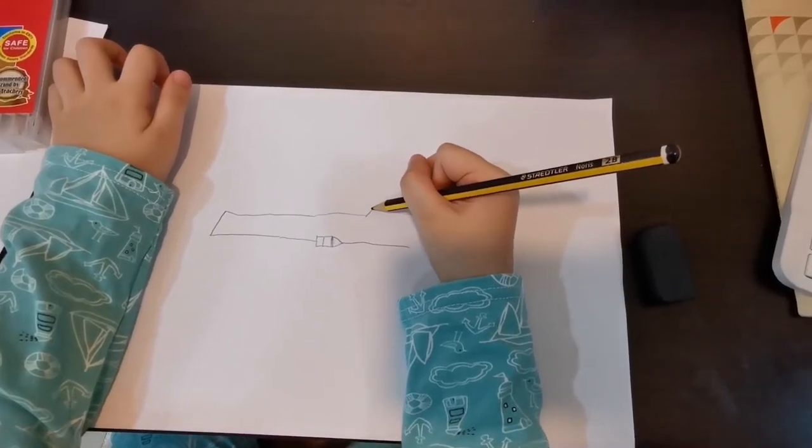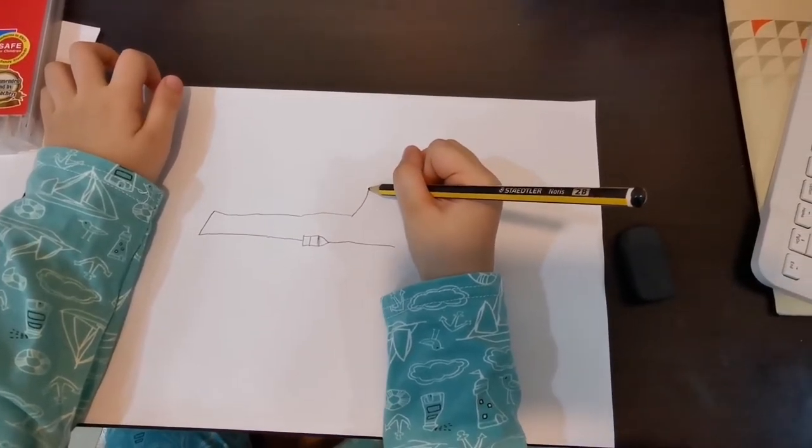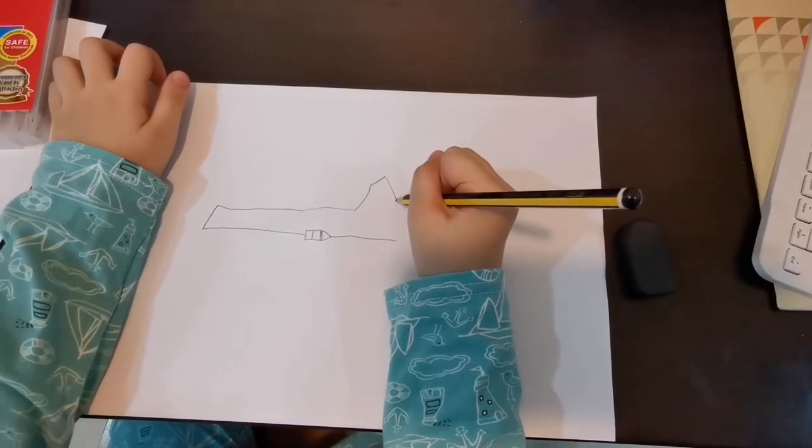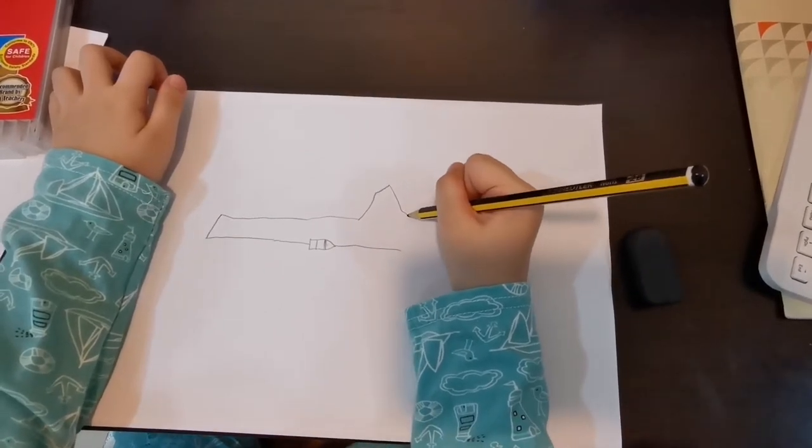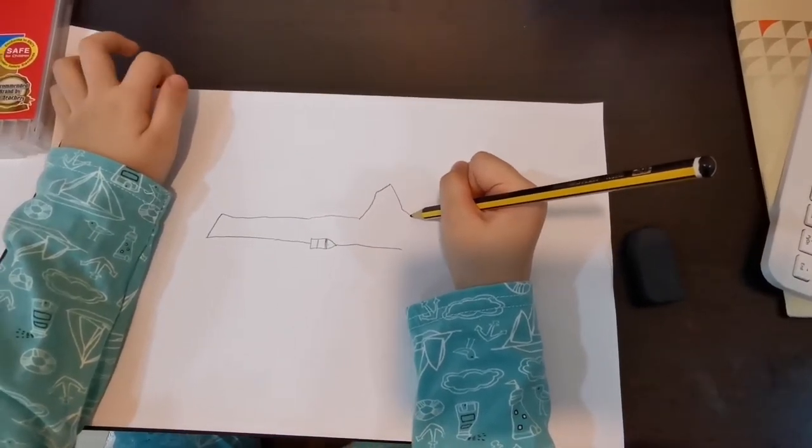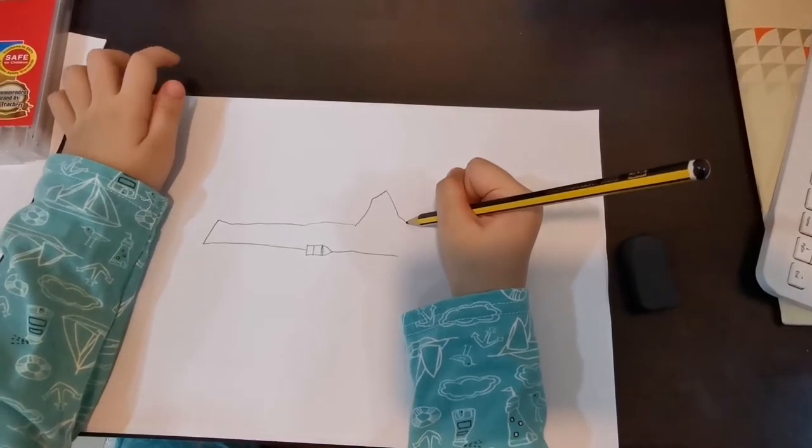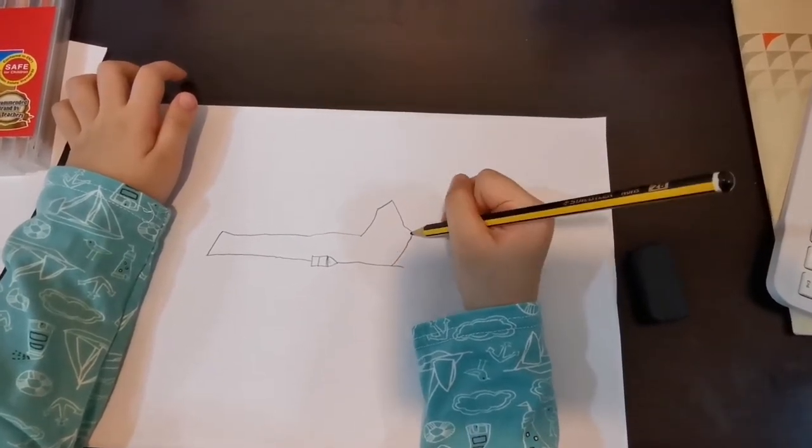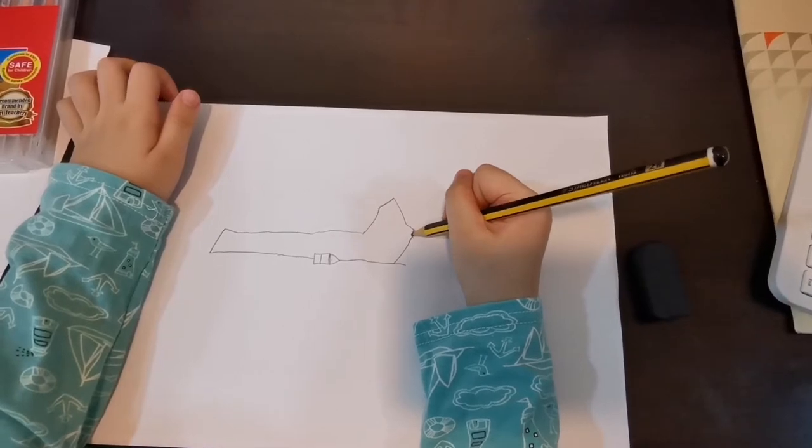And then you will draw the back of the plane. Now you are going to connect both sides together. And now you just put a bit of black here.